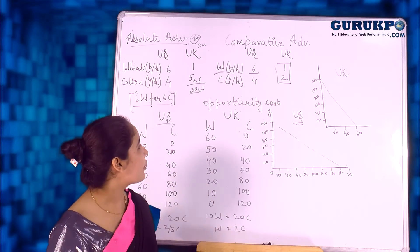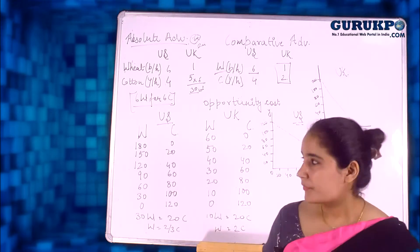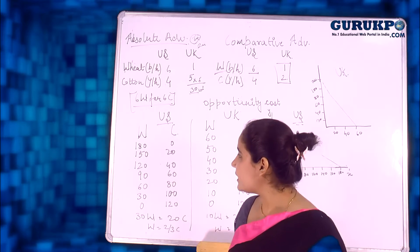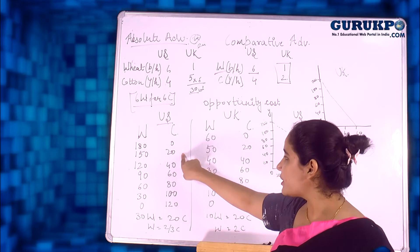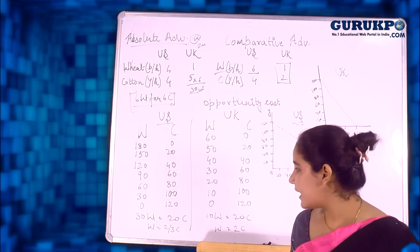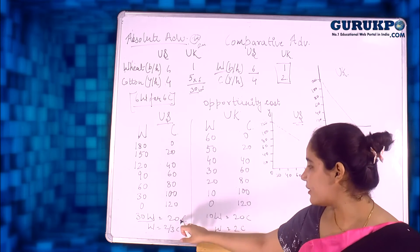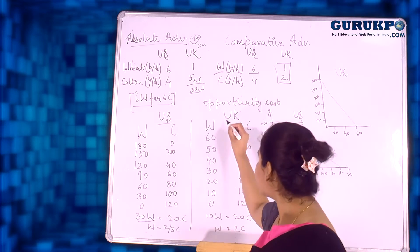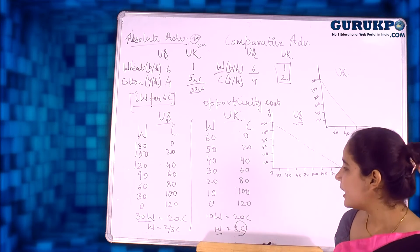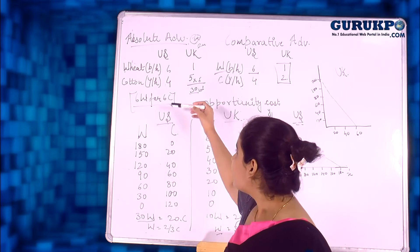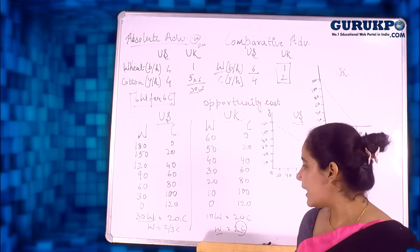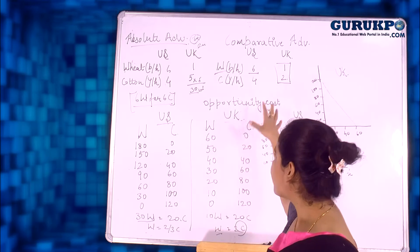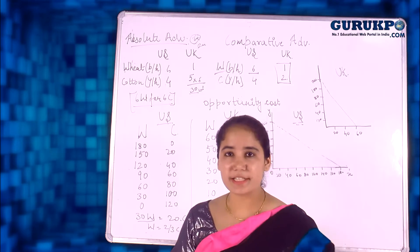Now we proceed to Haberler's theory based on opportunity cost. With the help of these tables, for every 30 units of wheat given up, a country gains 20 units of cotton. The opportunity cost for wheat in the US is two-thirds of C. In the UK's case, the opportunity cost for wheat is 2C. Since the US has less opportunity cost for wheat, it would prefer to export wheat, and UK would prefer to export cotton to the US.